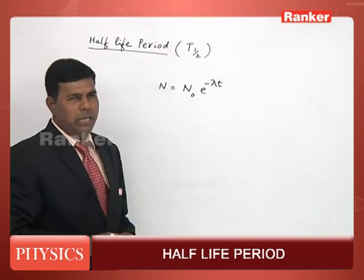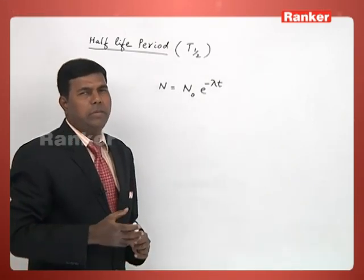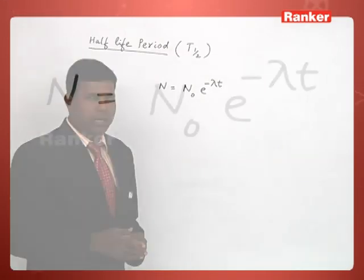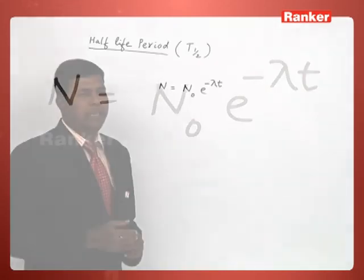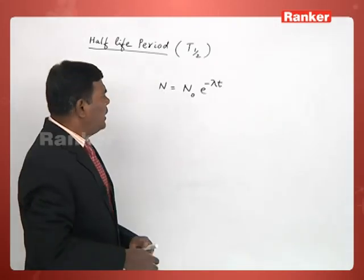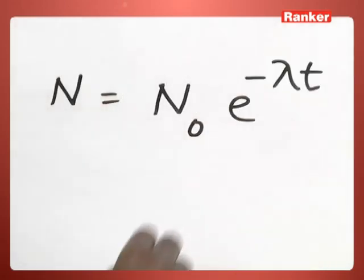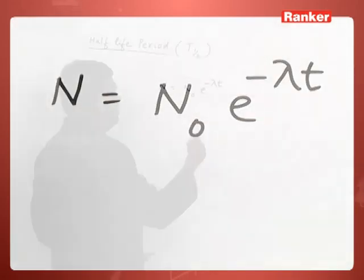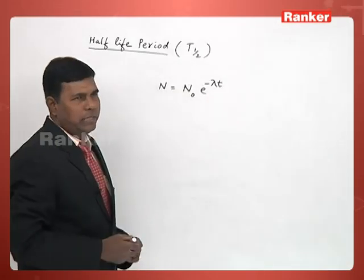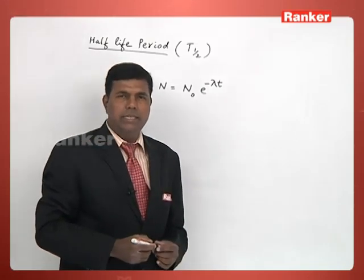It gives you a relation between initial number of nuclei of a radioactive material and the number of nuclei at any instant of time, in terms of decay constant lambda and time t, exponential decay. That is what we call radioactive disintegration law.